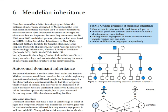We need to know the original principles of Mendelian Inheritance. Mendelian inheritance has two main terms. The first principle is that genes come in pairs and one is inherited from each parent.